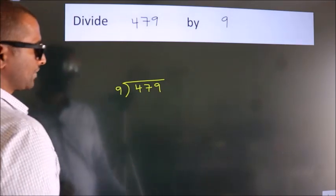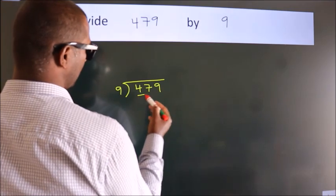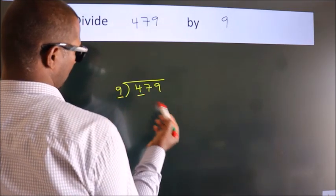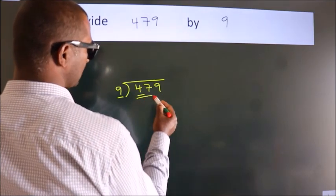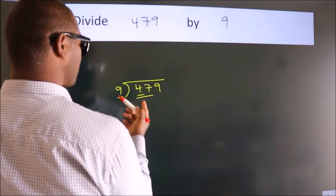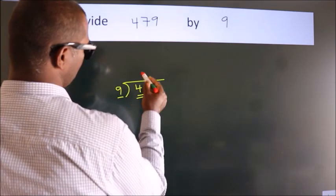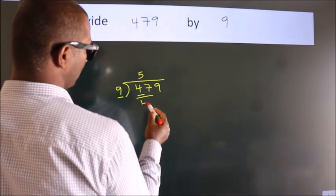Next, here we have 4, here 9. 4 smaller than 9. So, we should take 2 numbers. 47. A number close to 47 in 9 table is 9 fives, 45.